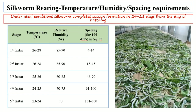The space requirement during the third instar for 100 disease-free layings is 46 to 90 square feet. During the fourth instar stage, 24 to 25 degrees centigrade with 70 to 75 percent humidity is required, and the space requirement for 100 disease-free layings is 91 to 180 square feet. During the fifth and final instar stage, the temperature requirement is 23 to 24 degrees centigrade with 70 percent relative humidity, and the space requirement is 181 to 360 square feet. Temperature and relative humidity decrease with successive instar stages, while space requirement increases.